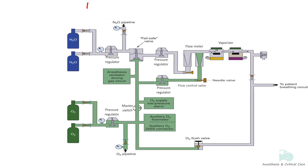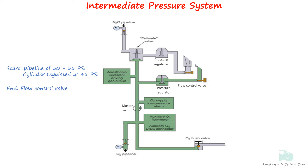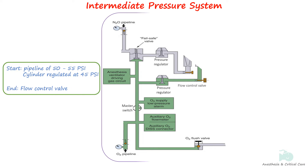The intermediate pressure system begins at the regulated cylinder supply pressure of 45 PSI and also includes the pipeline source at 50 to 55 PSI, and extends till the flow control valve.